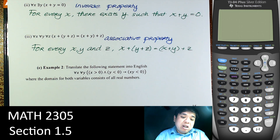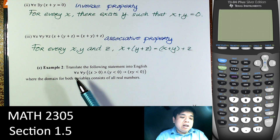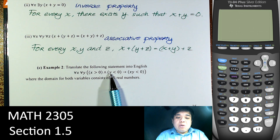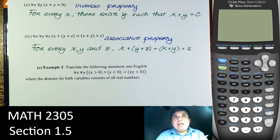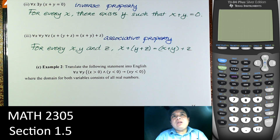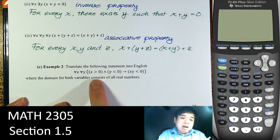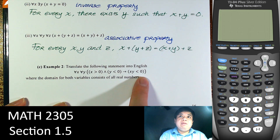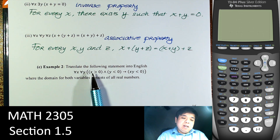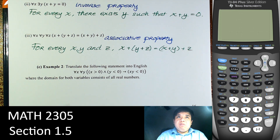Translate the following statement into an English statement, where the domain for both variables consists of real numbers. We say: for every real number, if x is greater than 0 and y is less than 0, then the product is less than 0. If we translate that into English and drop the intermediate step, we say: a product of a positive number and a negative number is negative.